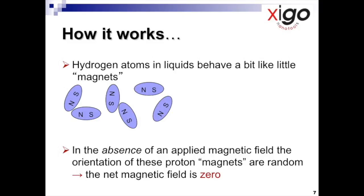So let's look at how NMR works. How does the methodology work? Hydrogen atoms in liquids behave a bit like little magnets, and so in this schematic, we show each liquid molecule, the blue ellipses, with a north and a south.